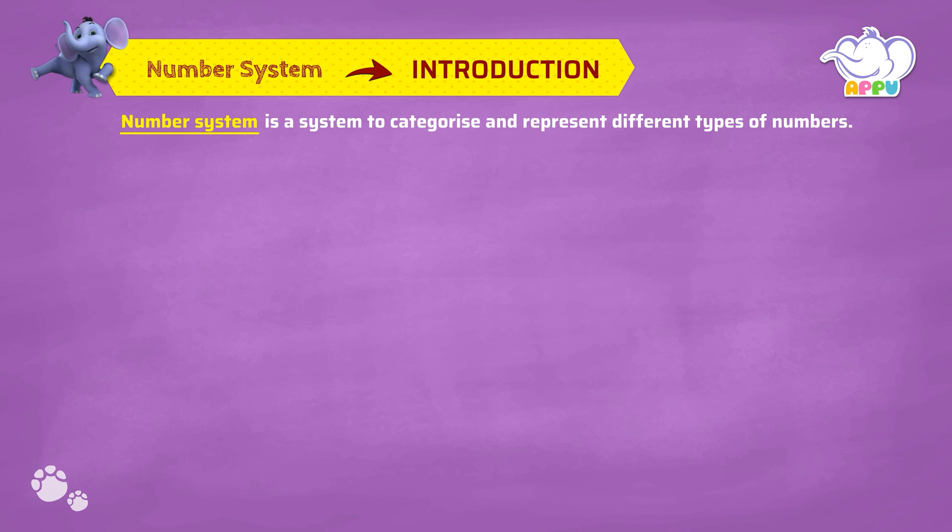We have natural numbers denoted by capital N. 1, 2, 3, 4, 5, etc. belong to natural numbers.